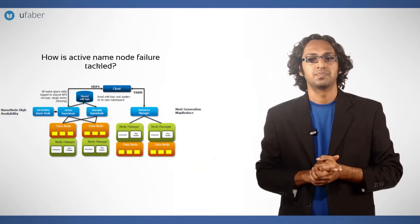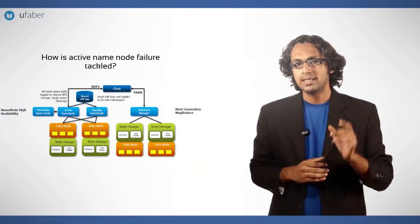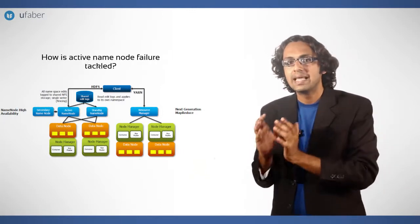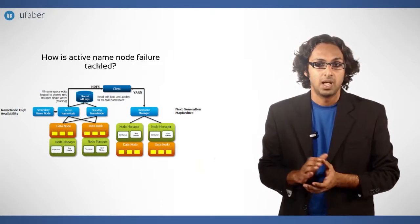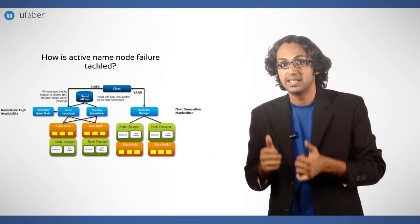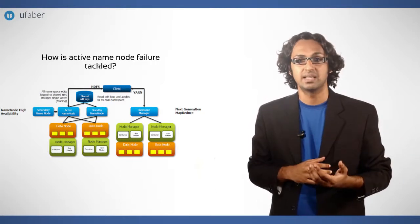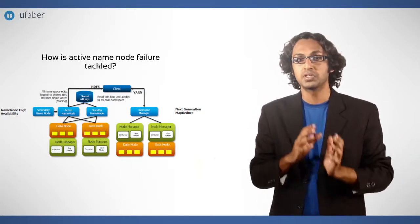How is ANN failure tackled? As we discussed, the SNN will automatically take over the duties of ANN when ANN fails. The failover is immediate, almost instantaneous, as all the data nodes reported to SNN too.